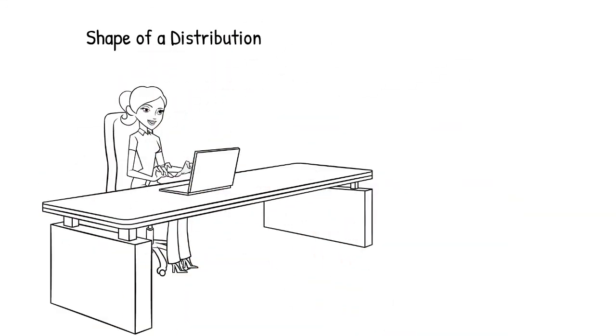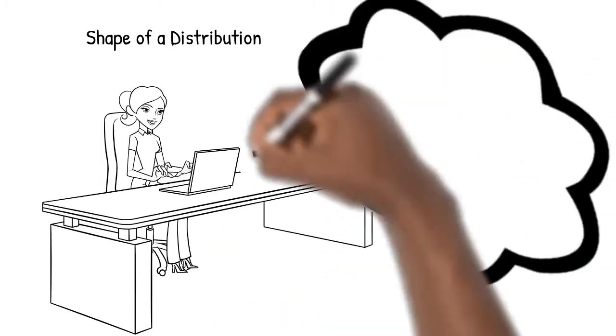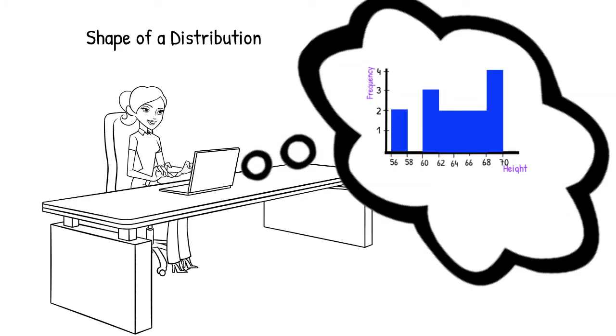So now you might be wondering, what does she mean by the shape of a distribution? You may recall learning how to create a histogram. Look at the shape created by the top of the bars in our histogram. This is the shape of our distribution.